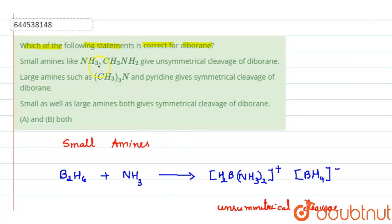Now, we will see that small amines gave us unsymmetrical cleavage, isn't it? And large amines gave us symmetrical cleavage. That means option 4 should be the right choice because both option A and B are correct choices in this question. Thank you.